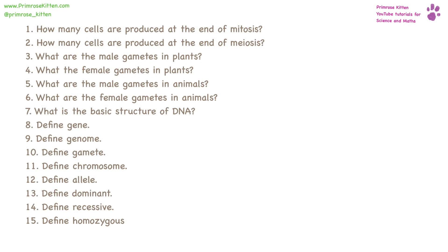How many cells are produced at the end of mitosis? Handy tip — it has a T in it, so that is going to be two. And at the end of meiosis, there are four. The male gametes in plants are pollen, and the female gametes in plants are eggs. The male gametes in animals are sperm, and the female gametes in animals are eggs.